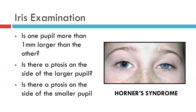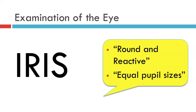And that really is all you need to say about the iris on your routine examination of your patient's eye. Thus, if all is normal, you can just state that the iris is round and reactive and the pupils are of equal size.